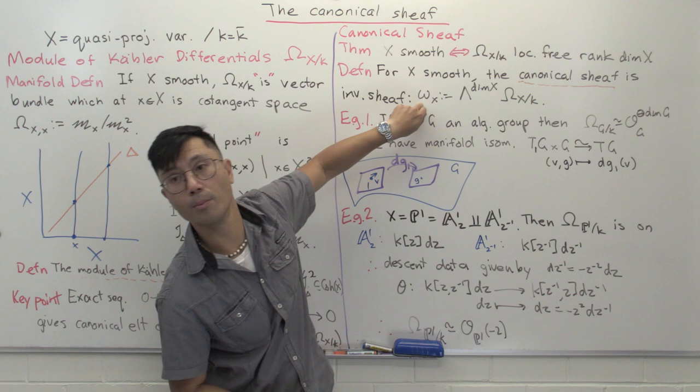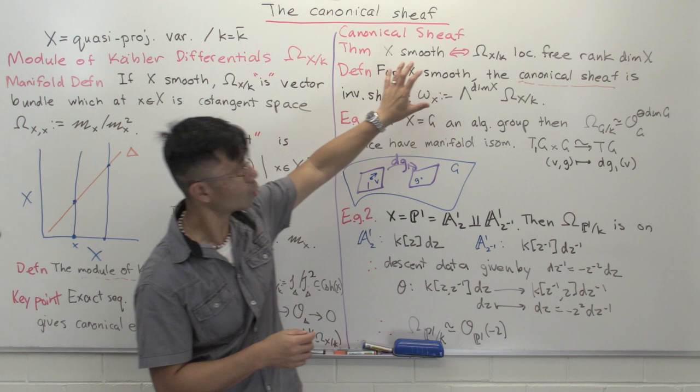If X is smooth, we can talk about the canonical sheaf in a simple way. Since omega X over k is locally free, we can take its top exterior product — the wedge product up to the dimension of X — and that becomes an invertible sheaf, corresponding to a line bundle. This invertible sheaf is usually denoted with a little omega_X. This is a very important gadget, and it may not be immediately clear why that should be the case.